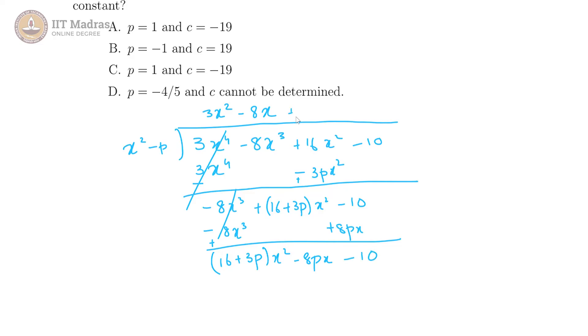We again multiply by 16 plus 3p here, and that gives us 16 plus 3p x square, and there is no x term. We get minus 16p minus 3p square. So this goes off again.